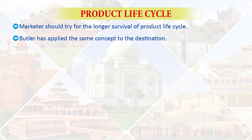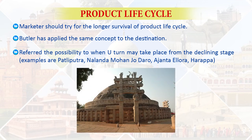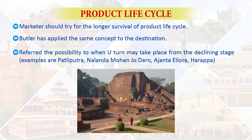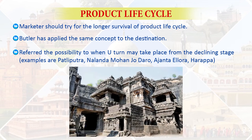Butler, the famous author, applied the product life cycle concept to destination life cycles. When this product life cycle is applicable to a destination, it becomes a destination life cycle. Butler suggested that after the declining stage, there may be a U-turn — like Pataliputra, Nalanda, Mohenjodaro, Harappa, Ajanta, and Ellora caves, which declined at one point but are reviving again.